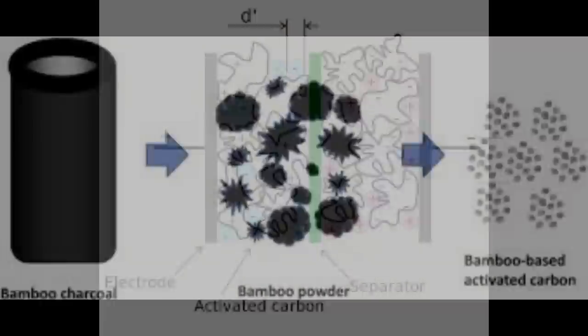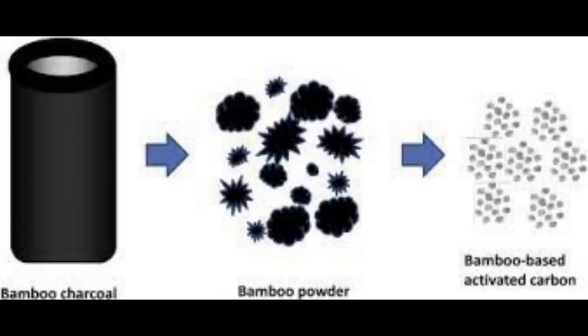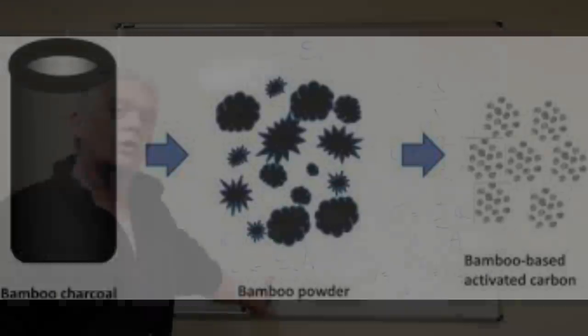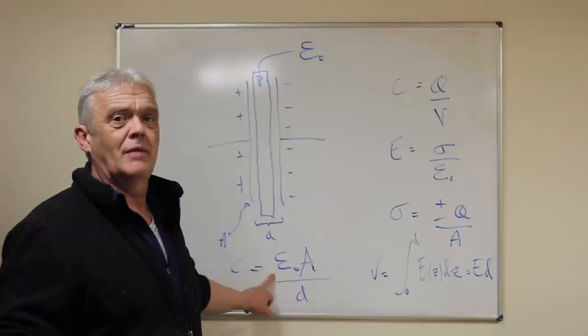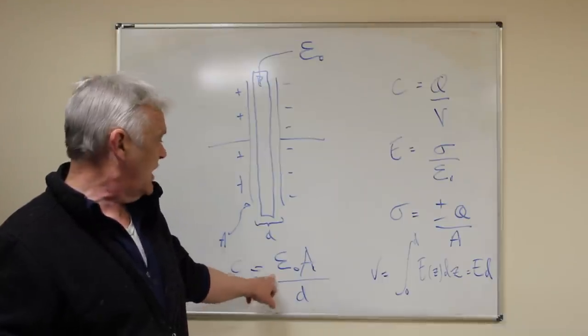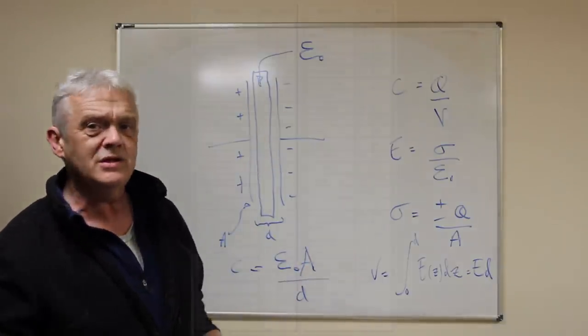This one, the permittivity, we can use that. This is what an awful lot of research is about. Things like barium titanate have a huge permittivity in the order of millions, whereas things like aluminum oxide on an electrolytic capacitor have permittivity in the order of tens to twenties.